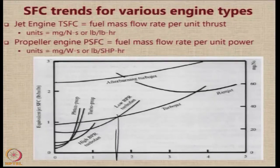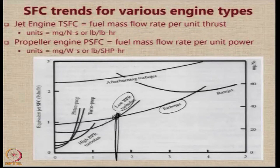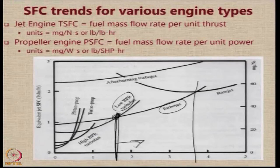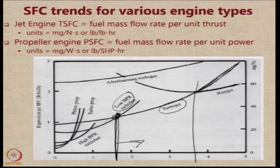For example, there is a nice intersection where low bypass turbofan and turbojets roughly have a crossover. At Mach numbers beyond around 1.8 it will be better to go for turbojets because they are going to have a lower value of SFC. Similarly, when you go to around Mach 3.7 to 3.8, the turbojets start showing an increasing trend in SFC, whereas ramjets become more economical.